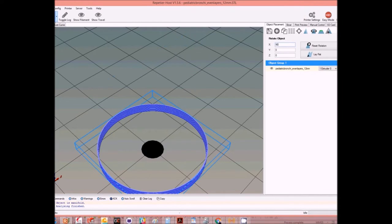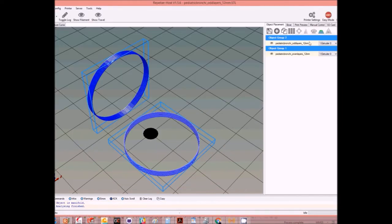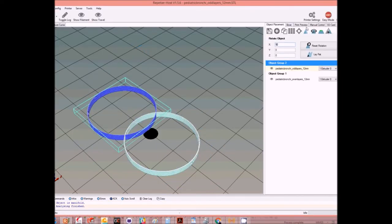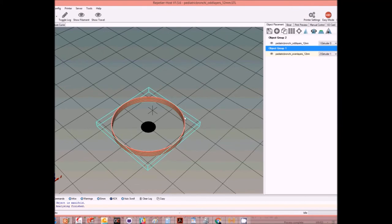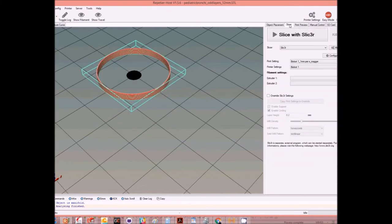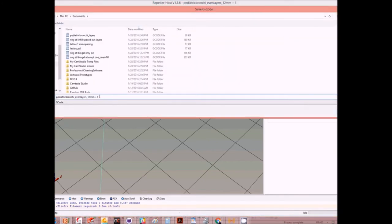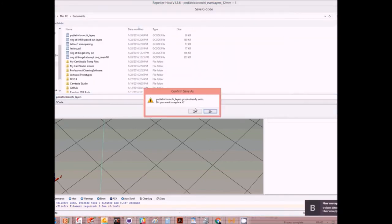Load both files into Slicer. Rotate and adjust each file to be centered in the build area. Then, adjust the Z height of the even layer to offset from the odd layer. Assign each file an extruder. Then, slice your material and save the G-code file.